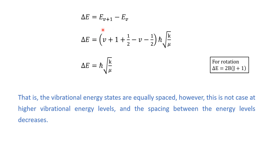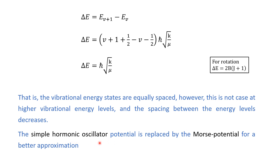Finding the difference between two vibrational energy levels shows that the spacing between vibrational energy levels is constant. Comparing with rotational energy levels, where spacing depends on j the rotational quantum number and increases as j increases — however, in the case of vibrational energy states, when we go to higher vibrational states the spacing between the vibrational states actually decreases. This means the simple harmonic oscillator potential is insufficient to fully explain the vibrational energy levels of a diatomic molecule.